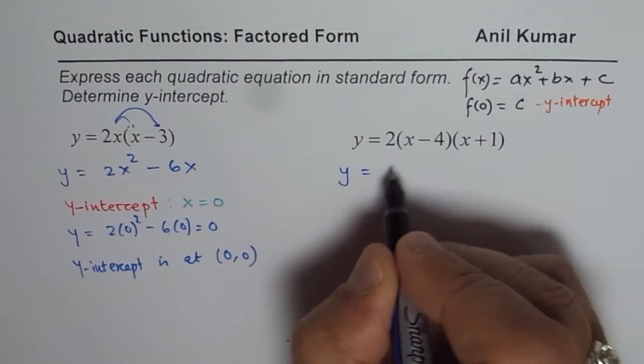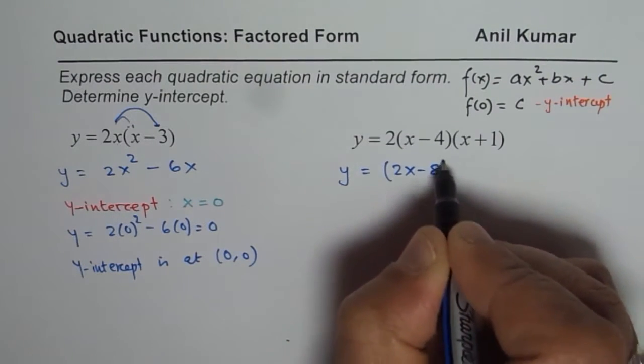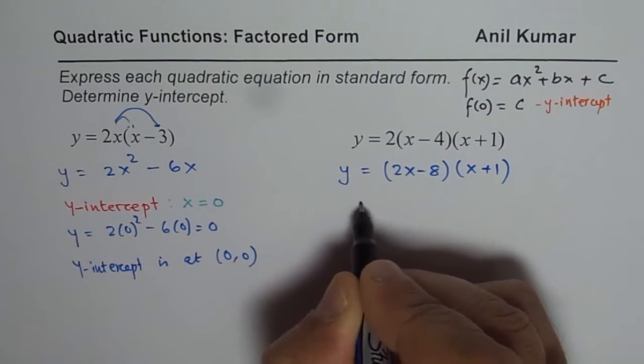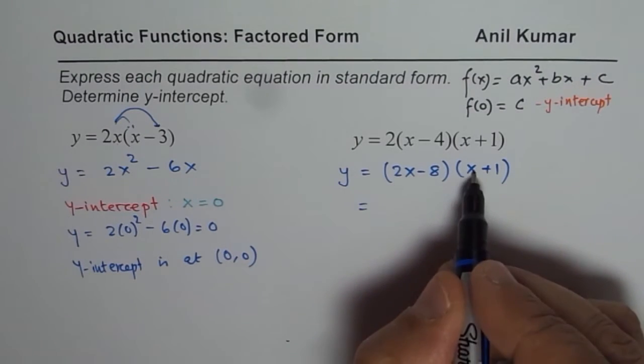in this simple case let me just first multiply by 2. So I get 2x - 8 times x + 1 and now we will apply the distributive property to get the answer. That means 2x times x.